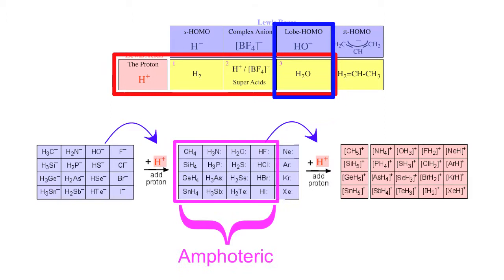It turns out that in the middle, species like methane, hydrogen fluoride, water, etc. are all amphoteric. They can behave as Bronsted acids and as Bronsted bases.